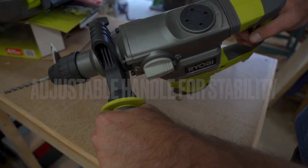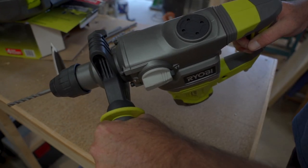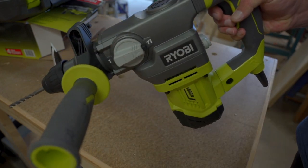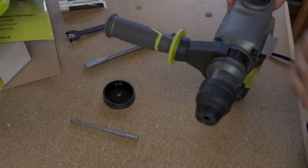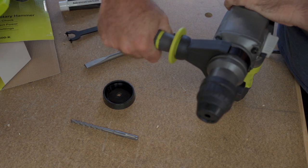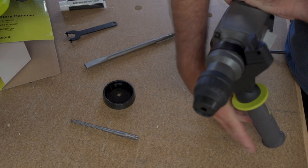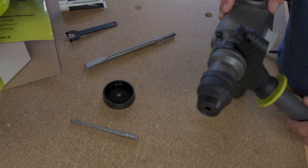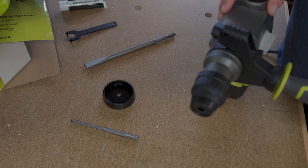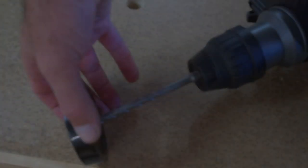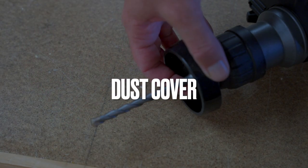The tool also comes with an adjustable handle for stability. You really do need to use both hands when using this tool because it's extremely heavy. To adjust the handle, just unscrew it. You can rotate it on the collar. When you've got it at the desired angle, just screw it back in place and you're good to go.